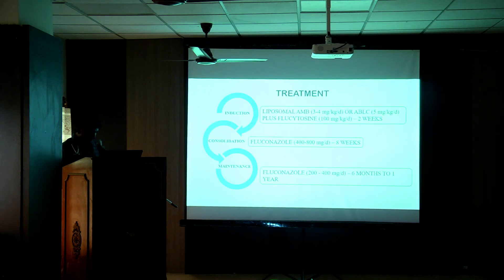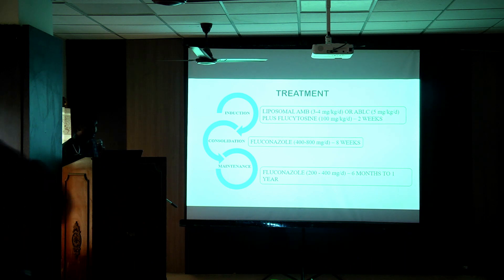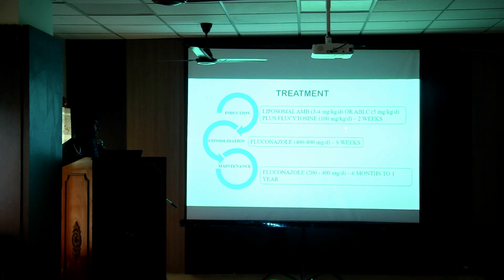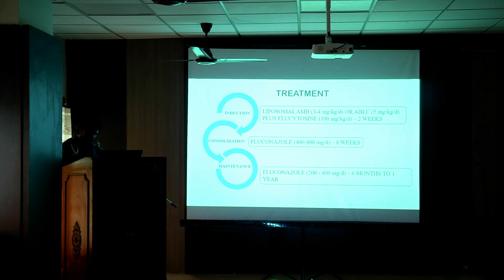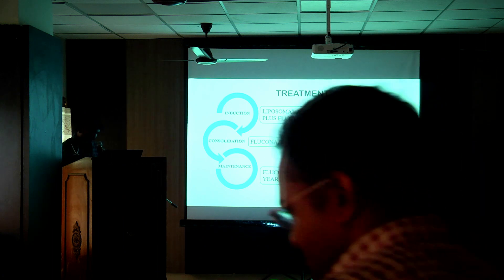Moving on to treatment — it involves three phases. In the induction phase, liposomal amphotericin B is given at 3 to 4 mg/kg/day plus tablet flucytosine at 100 mg/kg/day in three divided doses for two weeks. This is followed by the consolidation phase, where high-dose fluconazole at 400 to 800 mg/day is given for eight weeks. In the maintenance phase, low-dose fluconazole at 200 to 400 mg is given for six months to one year.